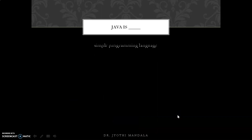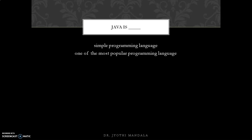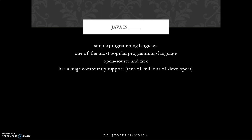Now what actually Java is — Java is a simple programming language and one of the most popular languages available. It is open source and free. The software required to develop any Java application is called JDK software, and that JDK software is open source and freely available. We can download and install it freely, and we have huge community support — tens of millions of developers who already know Java.